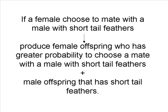If a female chooses to mate with a male with short tail feathers, they will produce female offspring who have a greater probability to choose a mate with short tail feathers, and male offspring that have short tail feathers.